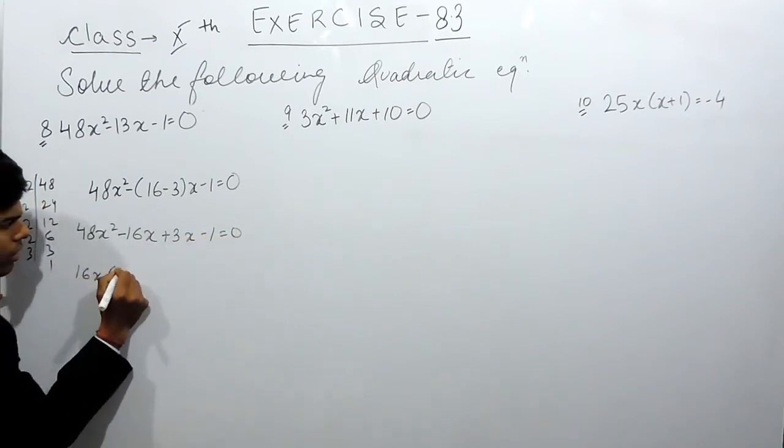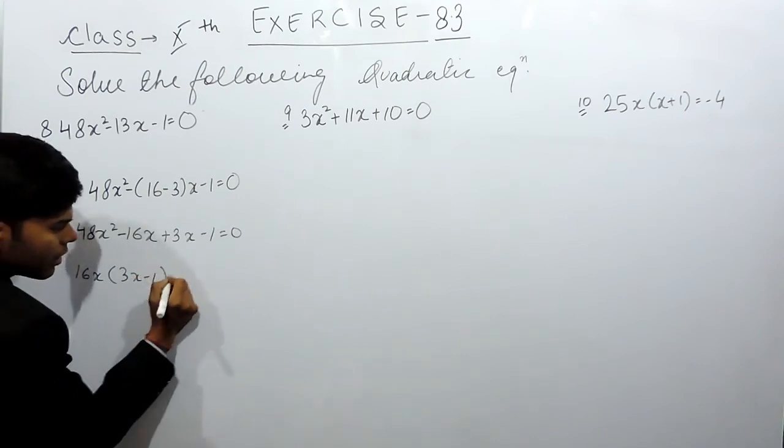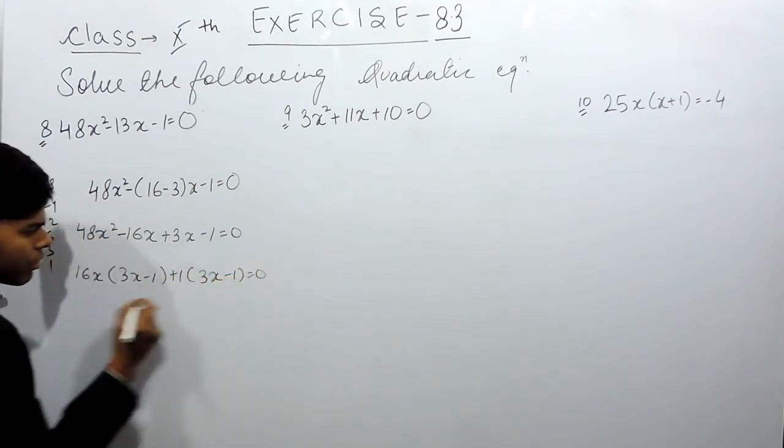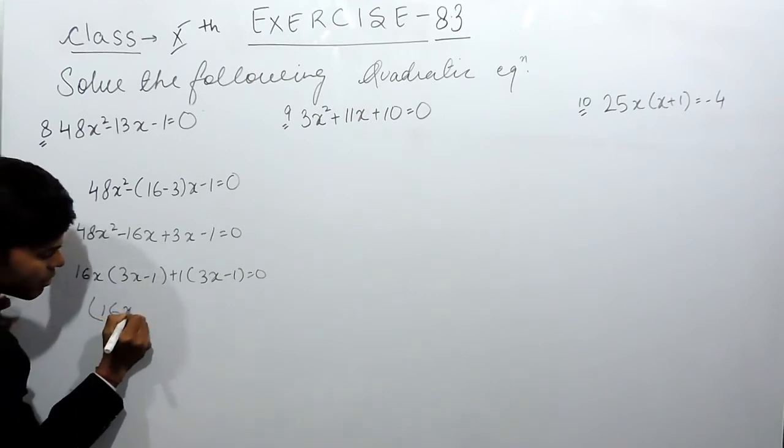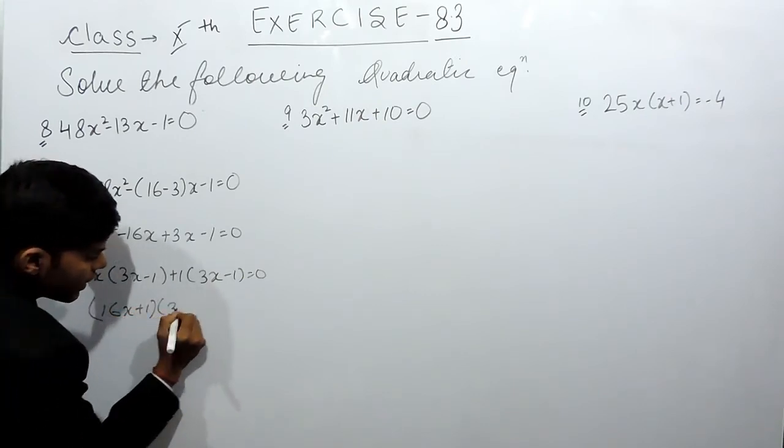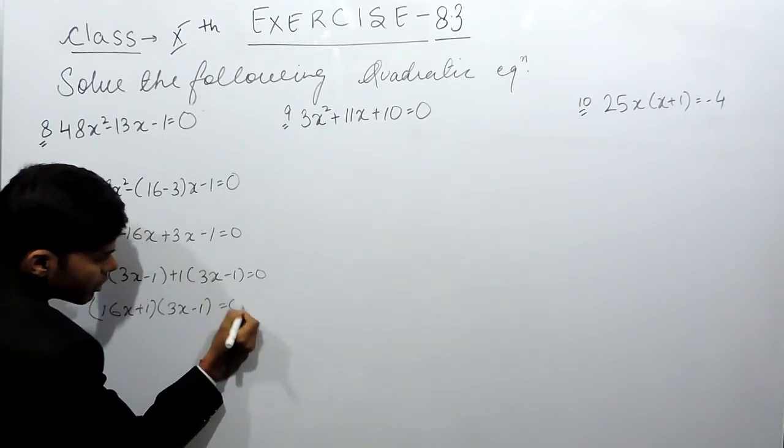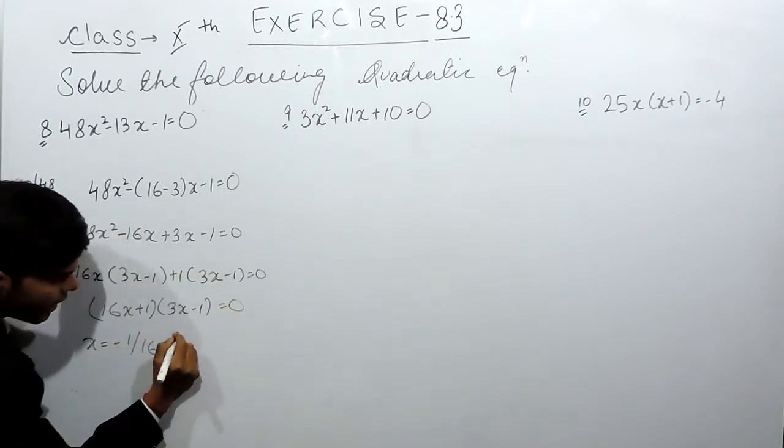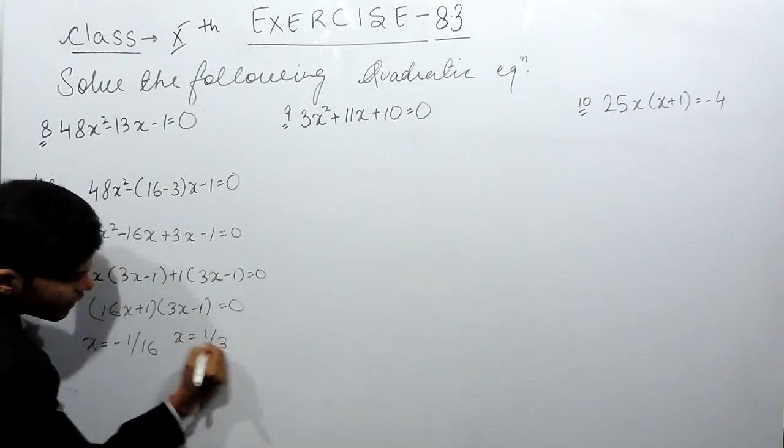16x is common, so 3x - 1 plus 1 is common, so 3x - 1 = 0. So 16x + 1, 3x - 1 = 0. So x will be equal to -1/16 and x will be equal to 1/3.